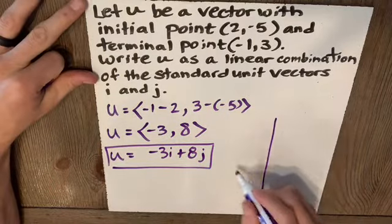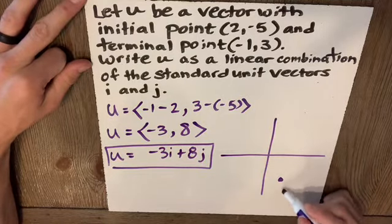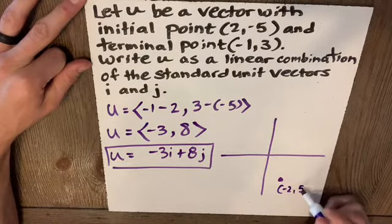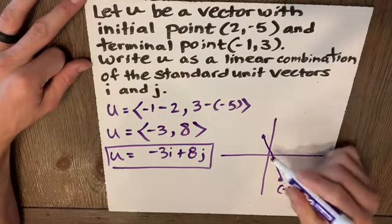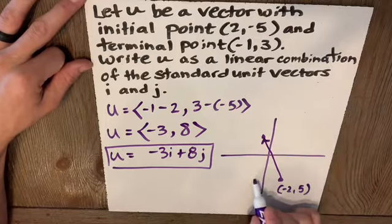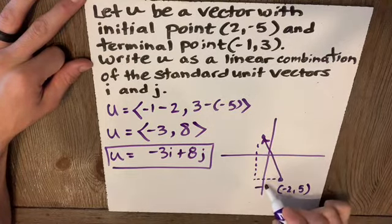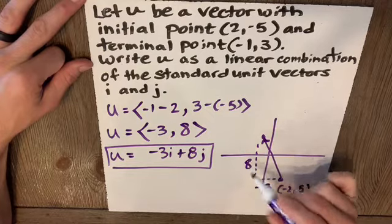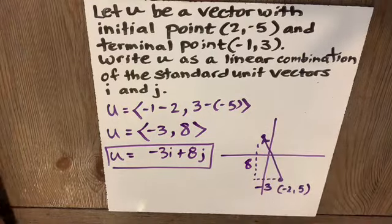Now, what does this look like? If our initial point here is over 2, down 5, here is (2,-5), and our terminal point is (-1,3), then we are expecting to go to the left and up. And we are. We're going to the left -3 and up 8 to wind up at that point. So the sketch matches what we thought.